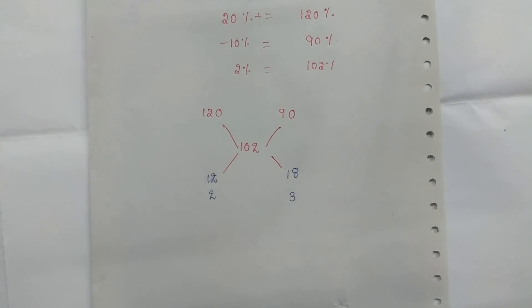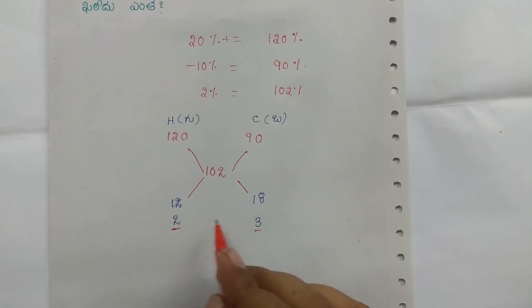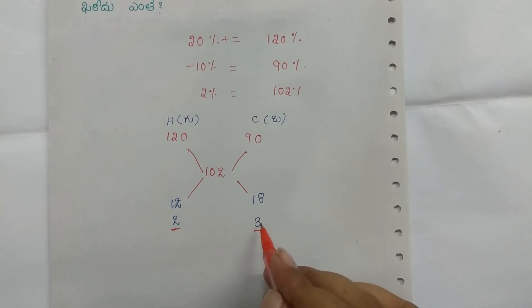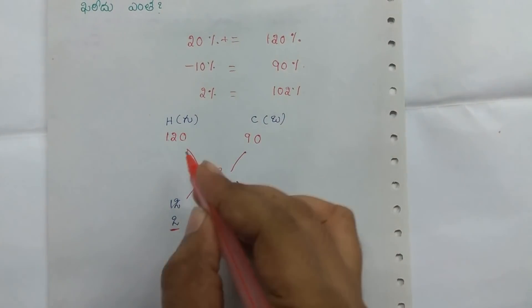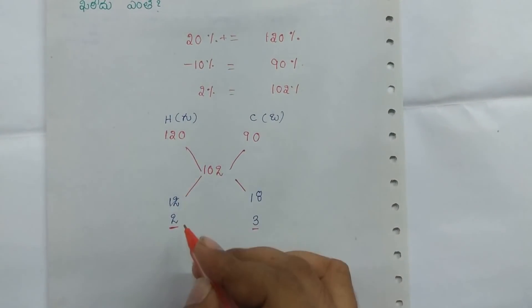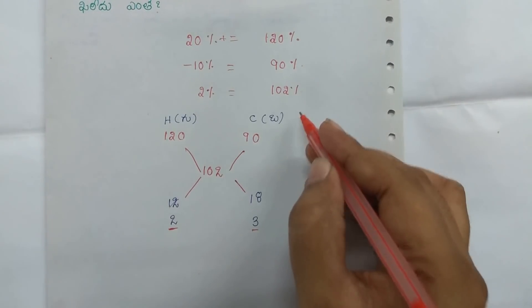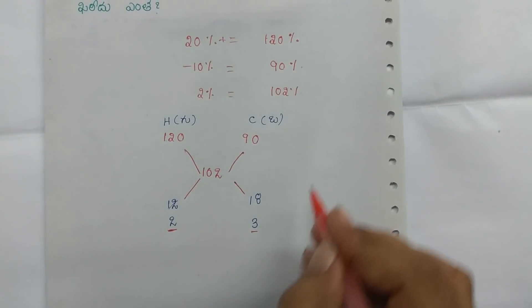2x confirms: so 2 is 1. Horse is 1. So 2 is 1.